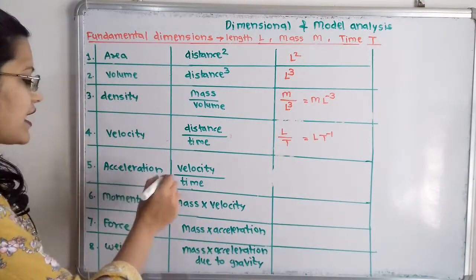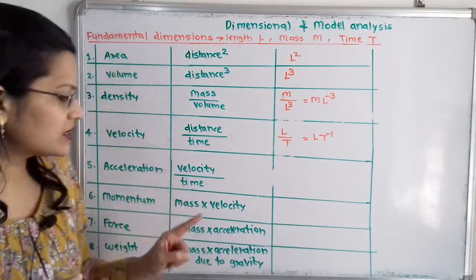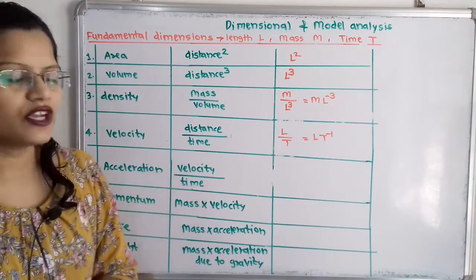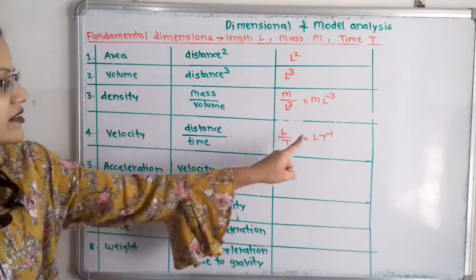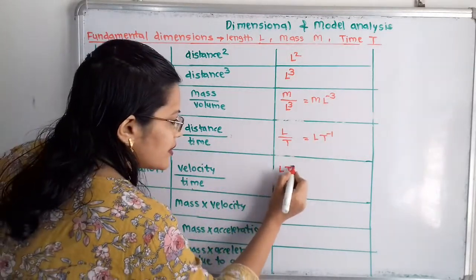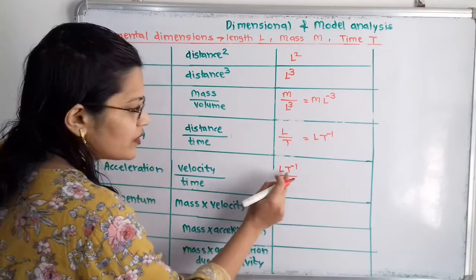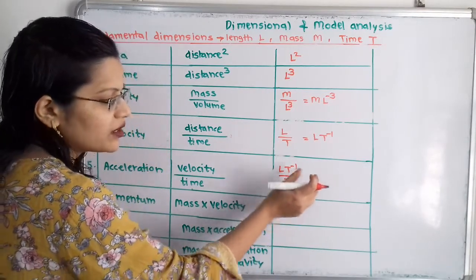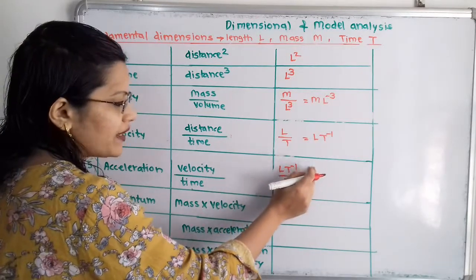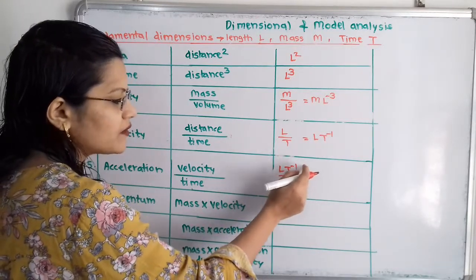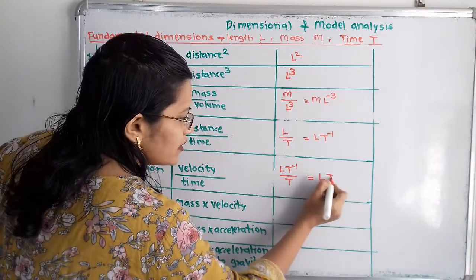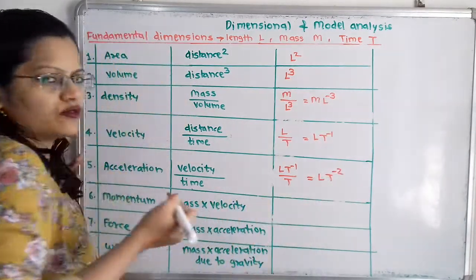Next is acceleration. Acceleration we define as velocity by time. Velocity is L into T raised to minus 1, divided by time T. Shifting the denominator T to the numerator gives T raised to minus 1 into T raised to minus 1, which equals L into T raised to minus 2.